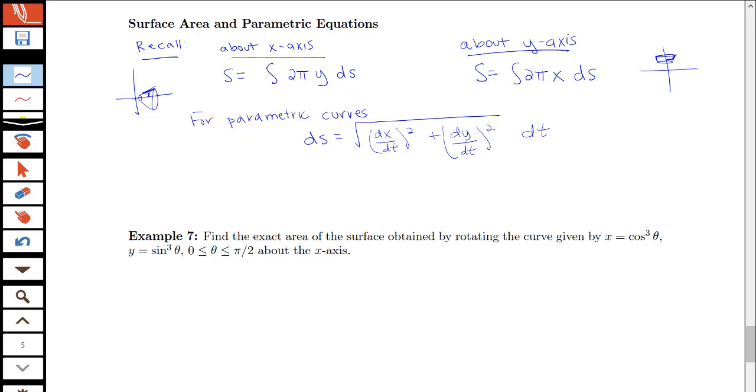And for a parametric curve given by x equals f of t and y equals g of t, then the y part would be g of t for going about the x-axis. The x part for going about the y-axis would be f of t. So it's taking the same formula that we had before, but just putting it in terms of our parametric form.